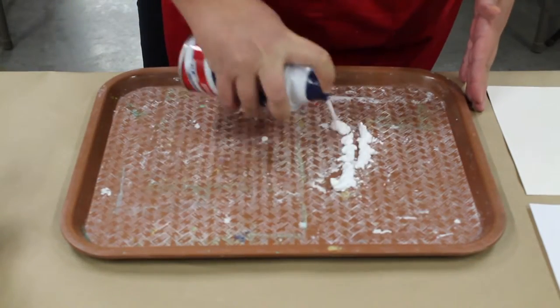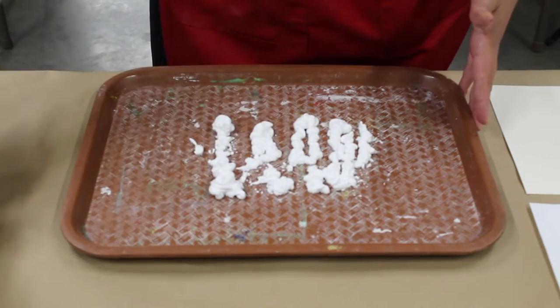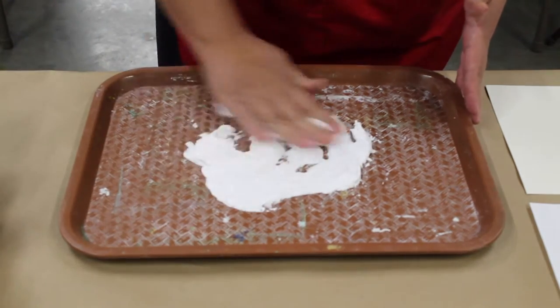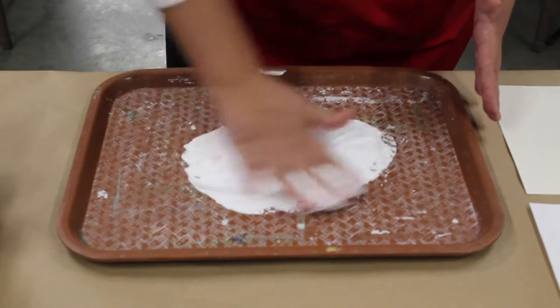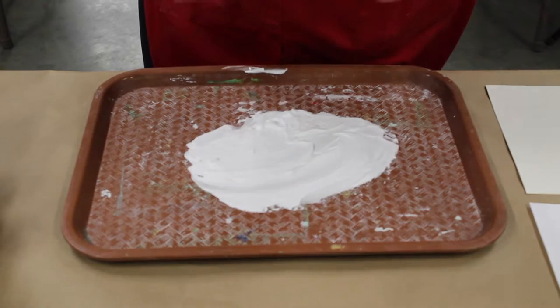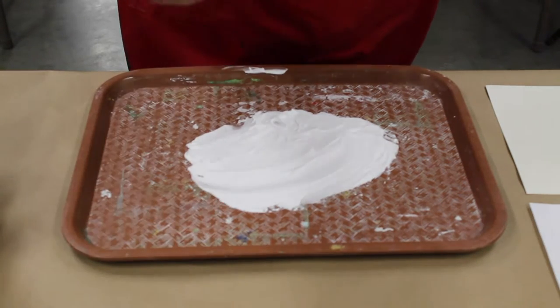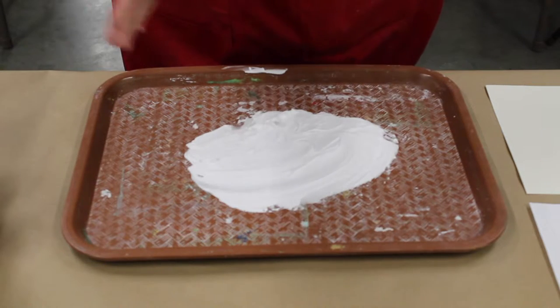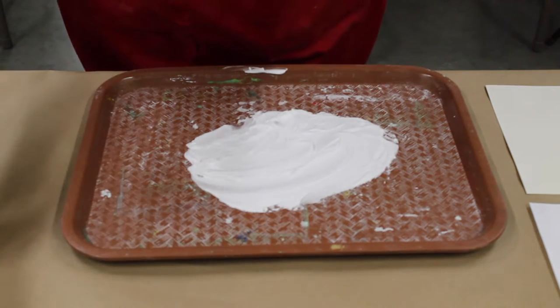We're going to start by putting some shaving cream down on the tray. Don't need a lot. And then I'm going to mix that up with my hand. Teachers, you want to help the student get the shaving cream out on the tray, but then encourage them to use their hands as a sensory activity to get that moved around. You can use a paper towel to clean off the excess mess.